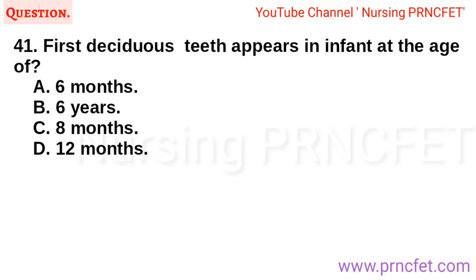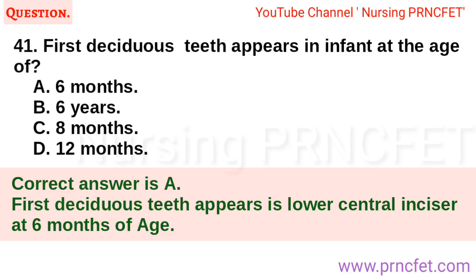Question 41: First deciduous teeth appear in an infant at the age of: A. Six months. B. Six years. C. Eight months. D. Twelve months. Correct answer is A. The first deciduous teeth to appear is the lower central incisor at six months of age.